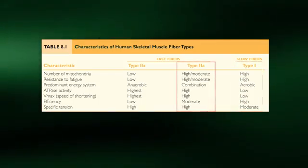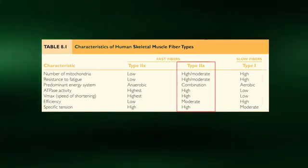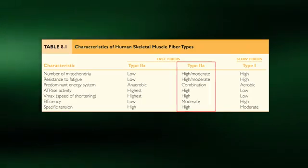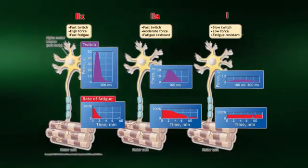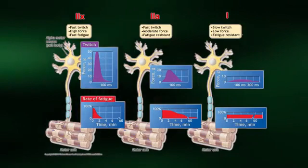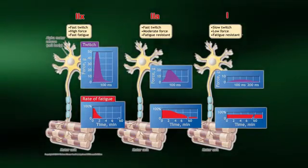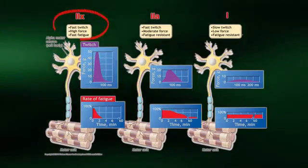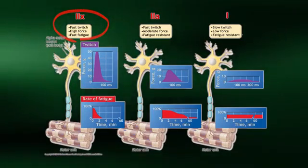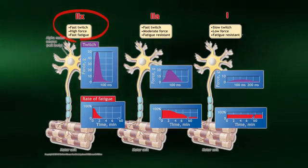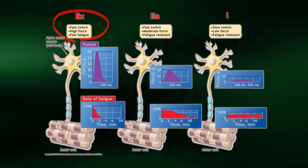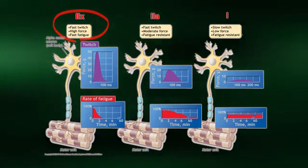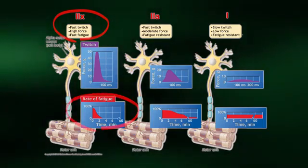Type 2A fibers are a hybrid of type 1 and type 2X fibers. Thus, they demonstrate characteristics from both of these fibers. Shown here are the motor units for each fiber type. A motor unit consists of the motor neuron and all the muscle fibers that it innervates. Notice again that the type 2X fibers can generate a great deal of force quickly. As such, they are ideal for explosive exercises, such as sprinting. However, as shown, they are quick to fatigue.